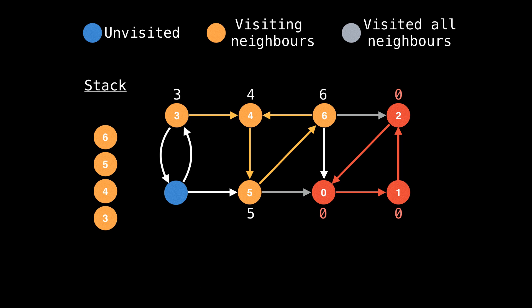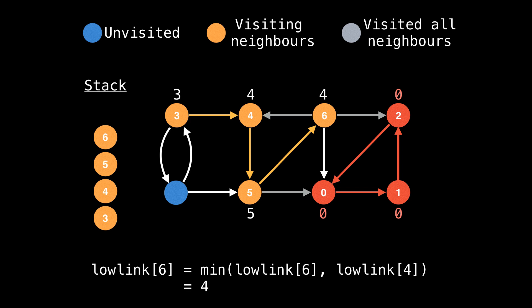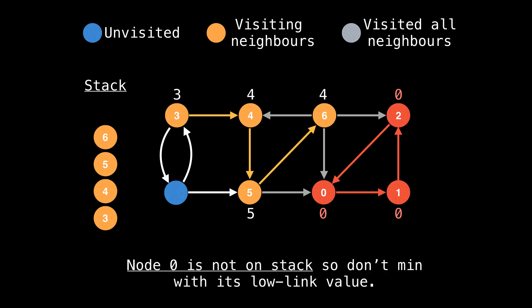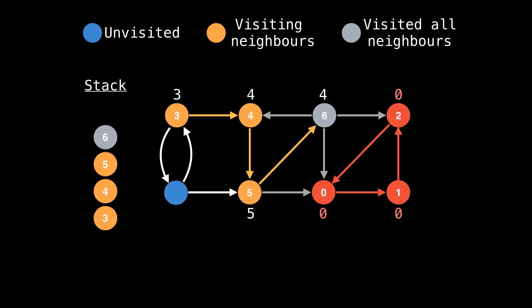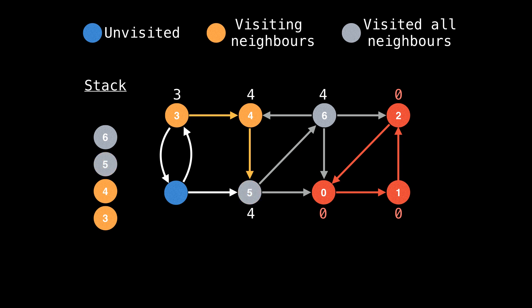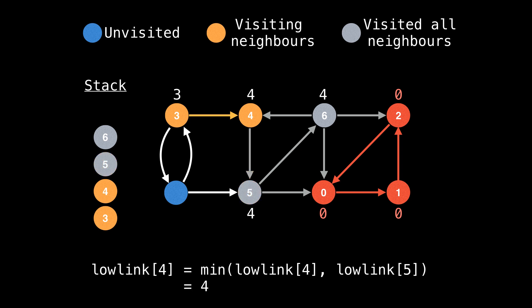Now let's take the left edge to node four. Node four is on the stack, so we can min its low link value, giving node six also a low link value of four. The last edge we need to visit is the one going to node zero. This is a situation where node zero is not on the stack, so we can't min with its low link value. On the callback, node five can min with node six's low link value because it is on the stack, and similarly for node four.